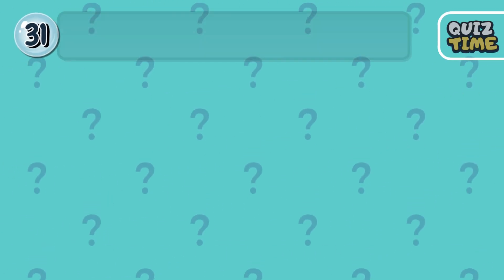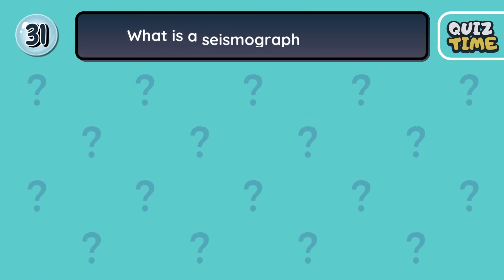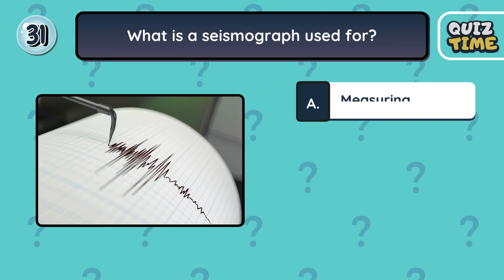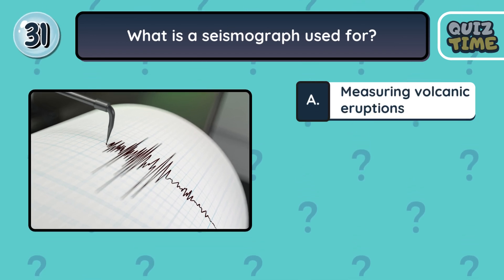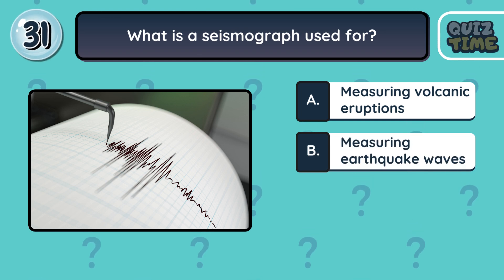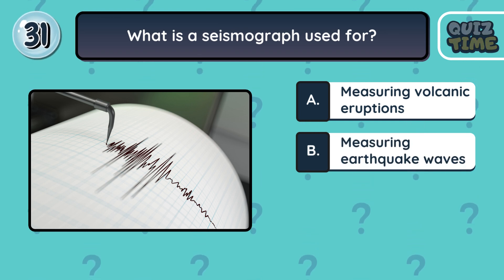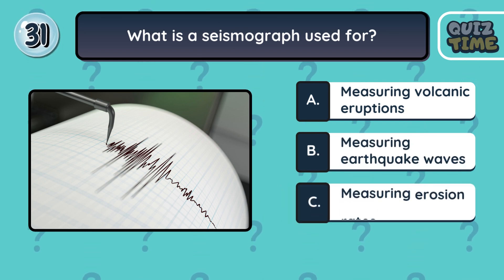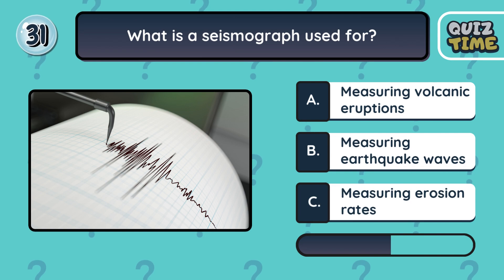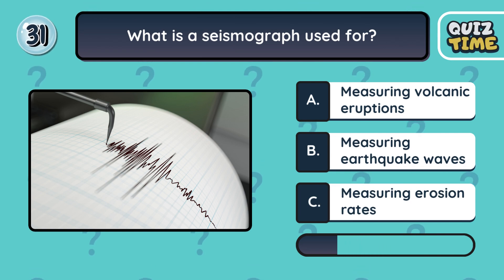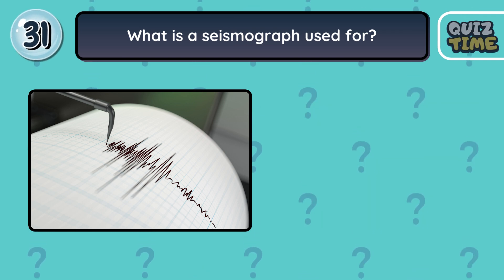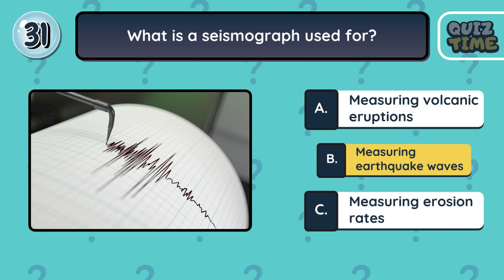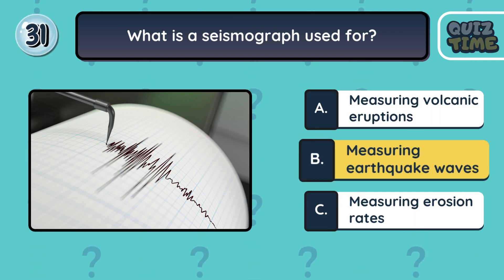Number 31. What is a seismograph used for? A. Measuring volcanic eruptions. B. Measuring earthquake waves. C. Measuring erosion rates. The correct answer is B. Measuring earthquake waves.